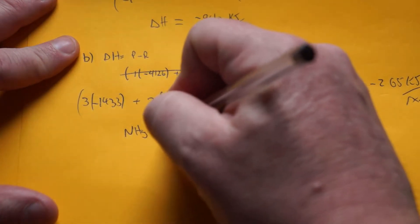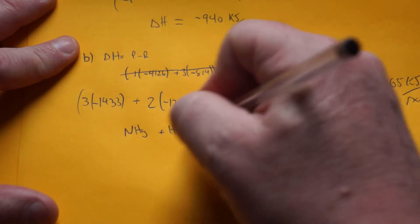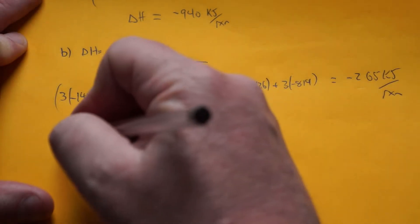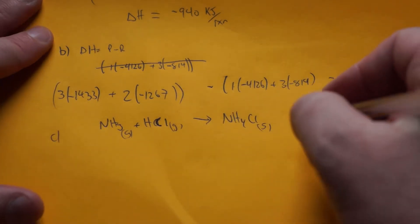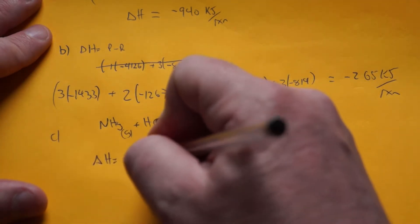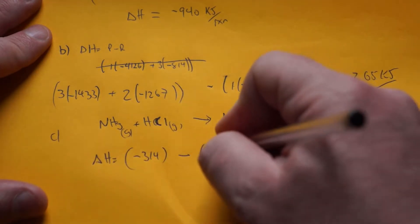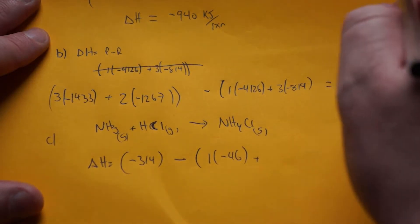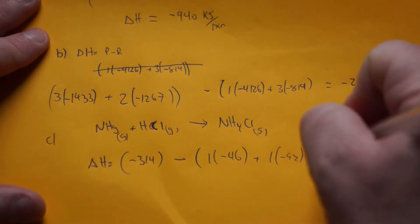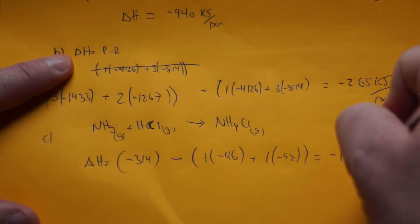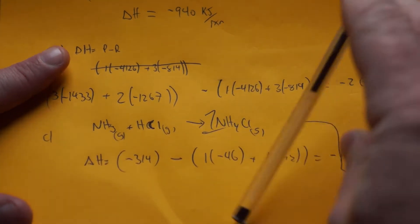The last one for 79: we're taking ammonia, NH3, reacting with hydrogen chloride — not hydrochloric acid, since it's not in water, it's HCl gas — forming solid ammonium chloride. This reaction is often used to demonstrate Graham's law of effusion. Products minus reactants: ΔH = negative 314 minus [1 × (−46) + 1 × (−92 for HCl gas)] = negative 176 kilojoules per mole, since there is 1 mole of product.